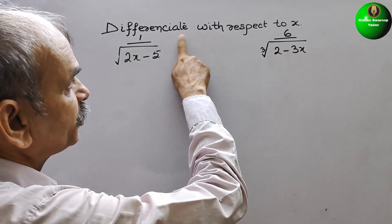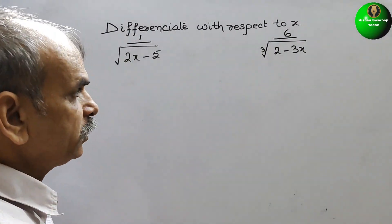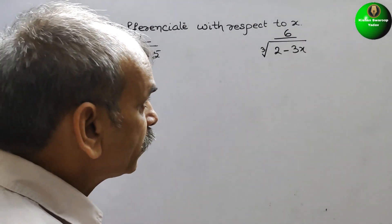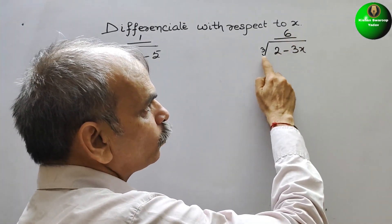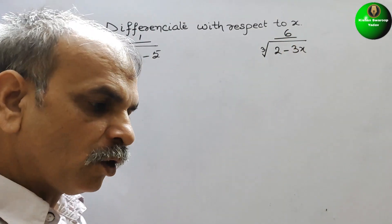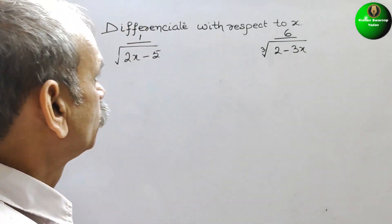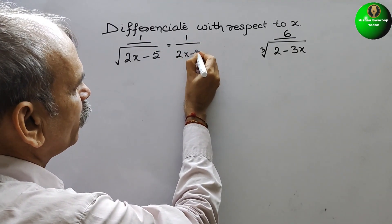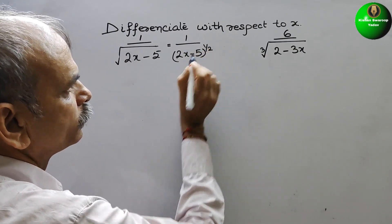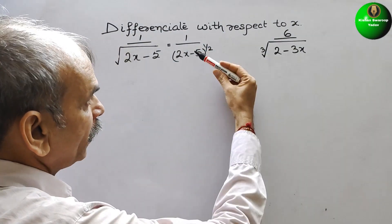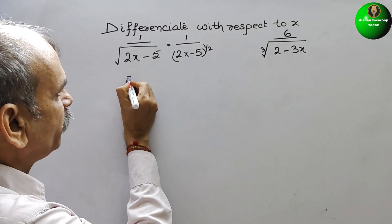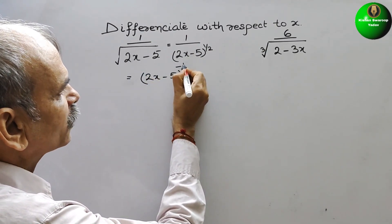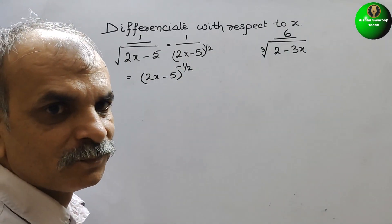The question is to differentiate with respect to x. They have given 1 by root over 2x minus 5, and 6 by cube root of 2 minus 3x. First we will rewrite: 1 by 2x minus 5 to the power 1 by 2. Bringing it upward, it becomes 2x minus 5 to the power minus 1 by 2.